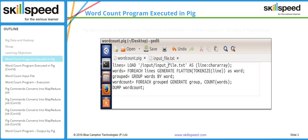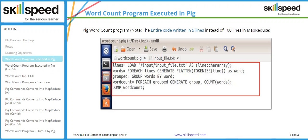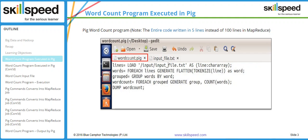There are five lines in this text file and the file has been saved with the name wordcount.pig. This is how you create a Pig script — you can take any text editor, write your code line by line, save it as a file with a .pig extension, and then it can be executed as a Pig script.